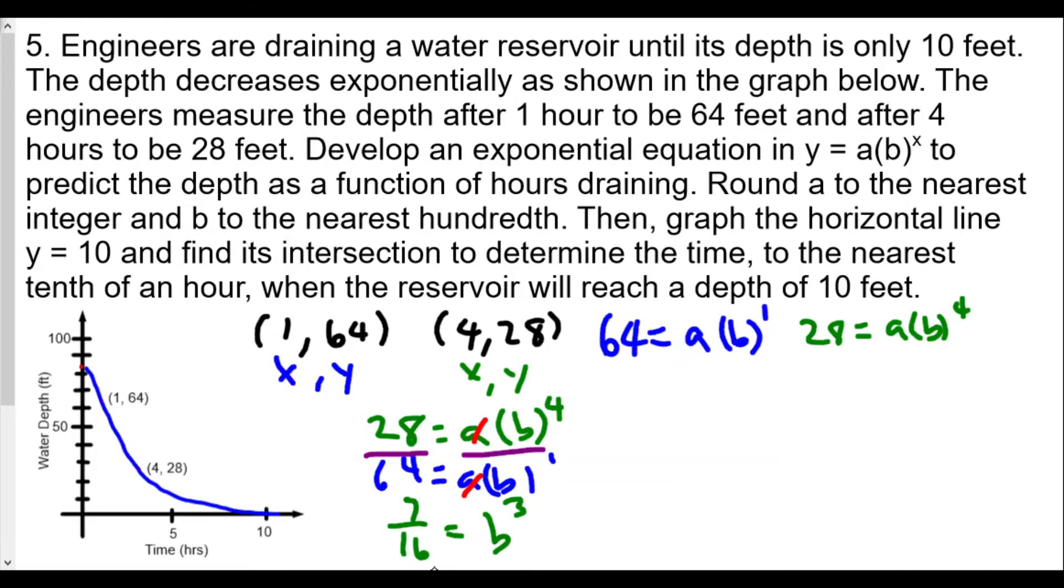Now what we want to do is find the cube root, because if we're taking some number to the third power, we're looking for a number that multiplied by itself three times gives us 7/16. We're going to raise both sides to the one-third power. We talked about the idea of getting b to the first by raising both sides by the reciprocal of the exponent for b.